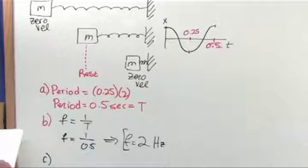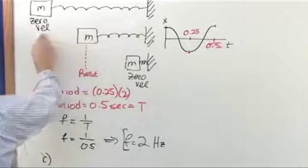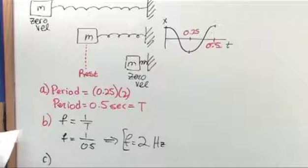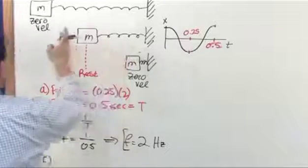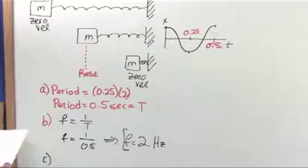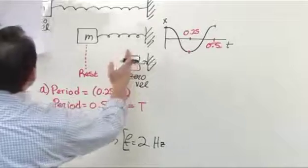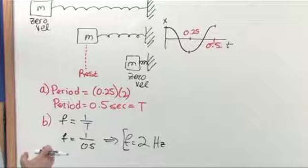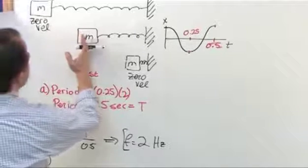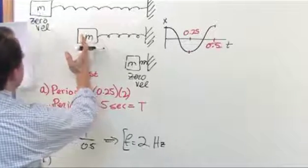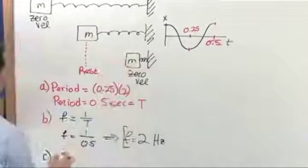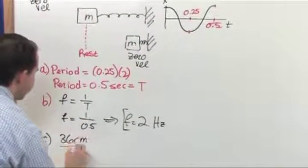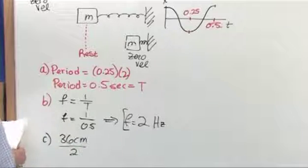The last thing we want to do is find out what the amplitude is, which is the distance from the rest position. Now it says right here, if the distance between the points, between these points of zero velocity, is 36 centimeters, what is the amplitude? What it's telling you is the distance between this zero velocity point and this one here is 36 centimeters. But that's not the definition of the amplitude. The amplitude is always the distance from the rest position up to a maximum. So you need to take this number that you were given, 36, and divide by 2. Okay? So 36 divided by 2.